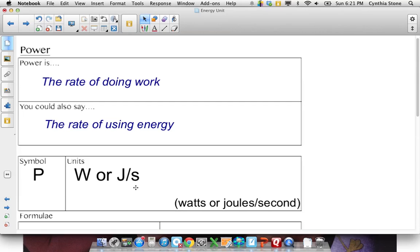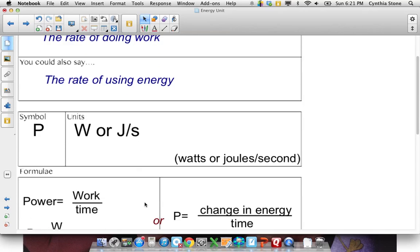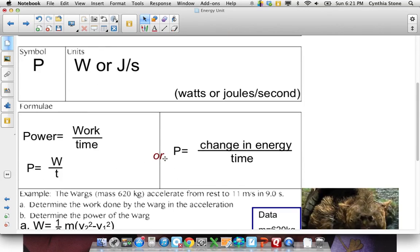Okay? So a watt, like if you think of a light bulb, ever look at a light bulb, it's always watts. 40 watts, 100 watts. That's a pretty bright one. 80 watt light bulb, that sort of thing.